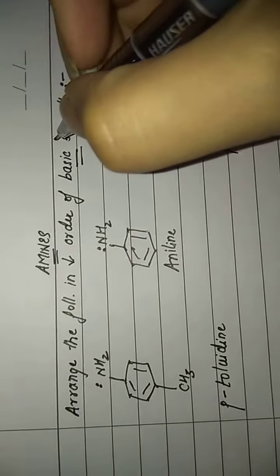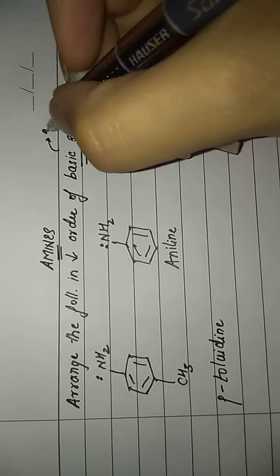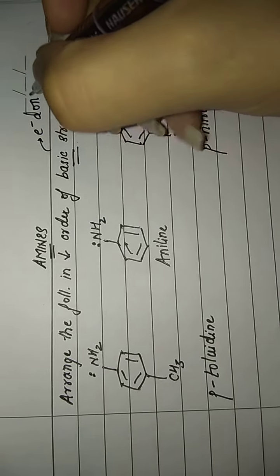Arrange the following in decreasing order of basic strength. First of all, what is basic strength? What are bases? Bases are those substances which are very good electron donors, those molecules which can donate electrons easily.